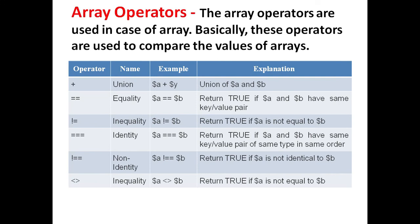Next is Array operators. The array operators are used in the case of arrays — basically these operators are used to compare the values of arrays. Plus, that is union, gives the union of a and b. Equality returns true if a and b have the same key and value pair. Inequality returns true if a is not equal to b. Identity returns true if a and b have the same key-value pair of the same type in the same order. Not identity returns true if a is not identical to b.